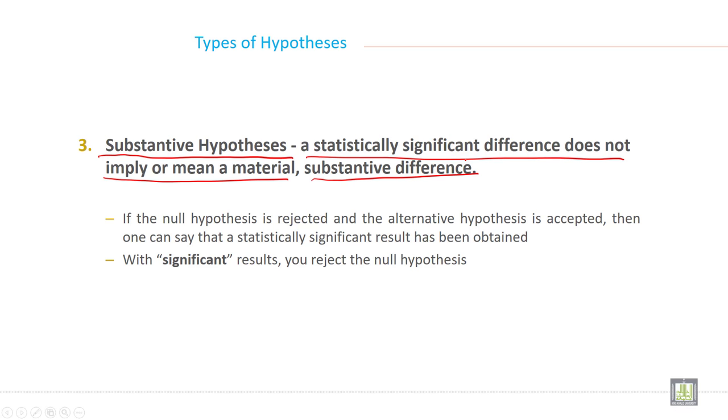If the null hypothesis is rejected and the alternate hypothesis is accepted, then one can say that a statistically significant result has been obtained. With significant results, you reject the null hypothesis, then it is called substantive hypothesis.